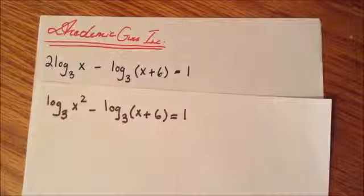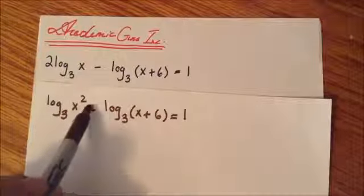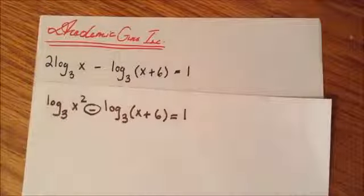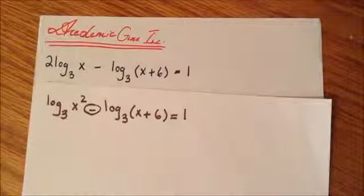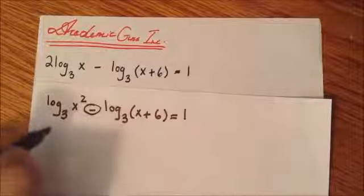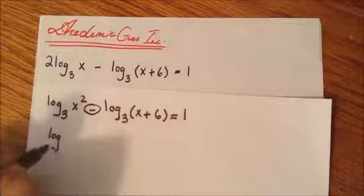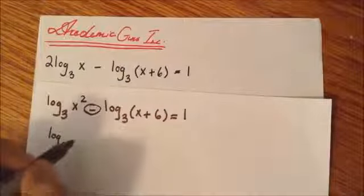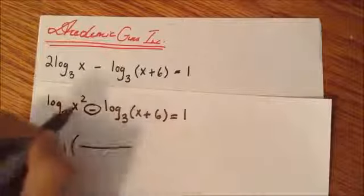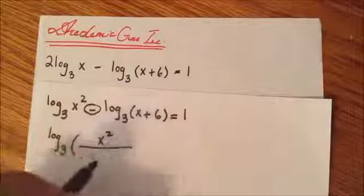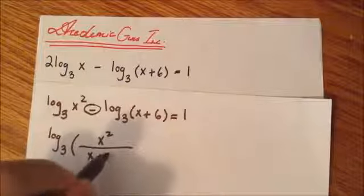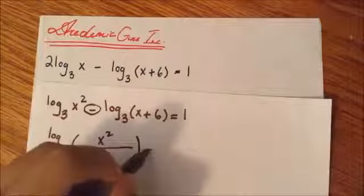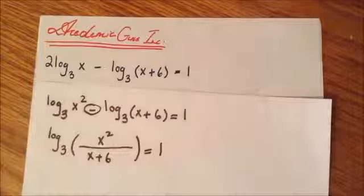Now I'm going to go back to my properties, and whenever we have a minus sign here, that means we can use our division property. So it's going to be one solid logarithm base 3, and then we're going to have our x squared divided by x plus 6 equals 1.